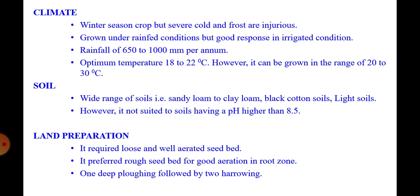However, it can be grown in the temperature range of 20 to 30 degrees centigrade. Chickpea is grown on a wide range of soils in India, from sandy loam to clay loam. In the north, gram is generally grown on moderately heavy soils. In Maharashtra and on the Deccan Plateau, black cotton soils are used. Light soils, mostly sandy loams, are preferred in Punjab, UP, Haryana and Rajasthan. The best type of soil is well-drained and not too heavy, free from excessive soluble salts and near to neutral in reaction. Soils with pH more than 8.5 are not suited.